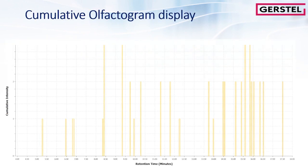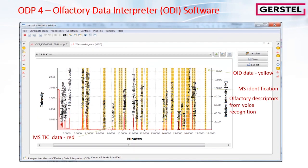The cumulative olfactogram displays intensities versus duration of detected odor regions. When a sample is evaluated in a multiple dilution or multiple panel list, the resulting olfactograms are combined and presented in cumulated form. The ODI software adds the respective odor intensities and displays the cumulative value. This screenshot shows how the total ion chromatogram data in red is overlapped with the compound intensity data in yellow and the text annotation obtained from the speech-to-text feature.